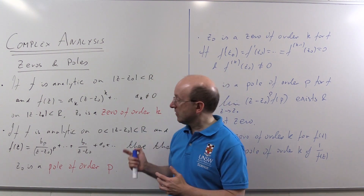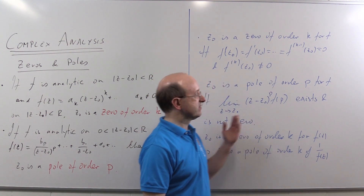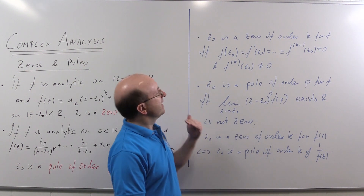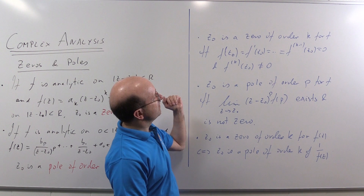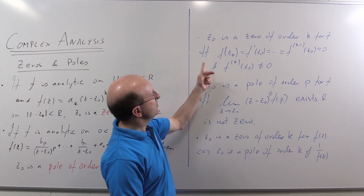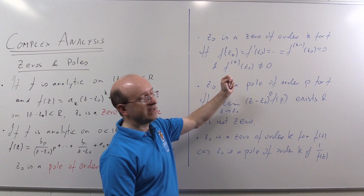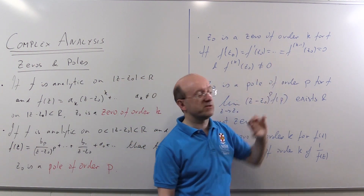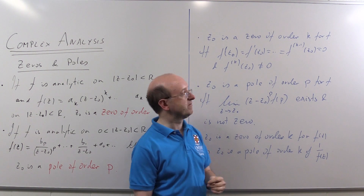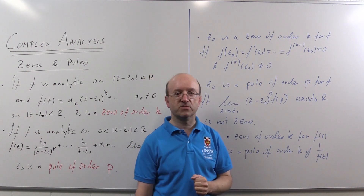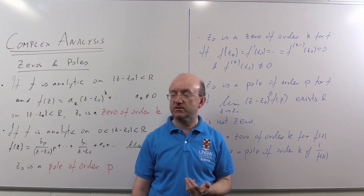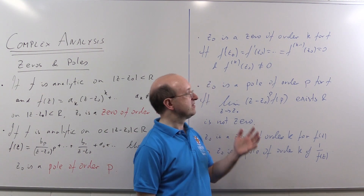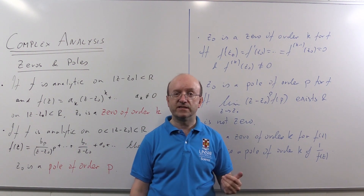In order to detect zeros and poles, we use the results on the other half of the whiteboard. If z₀ is a zero of order k for a function f, if and only if the function vanishes at z₀ and so does its first derivative — in fact, its first k−1 derivatives all vanish, but the k-th derivative does not. If you remember Taylor's theorem, the coefficients of the power series are just multiples of the derivative, so that's an easy thing to prove.